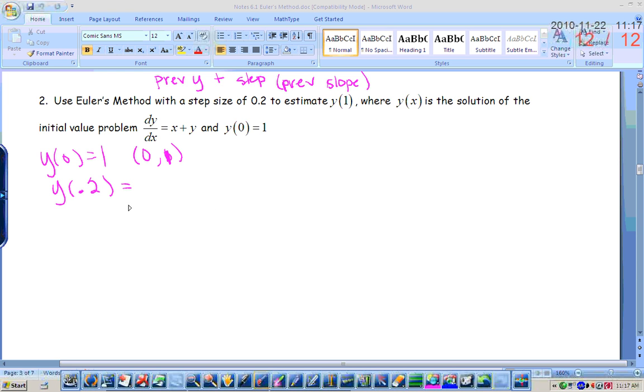The previous y value, so the previous y value would have been the y value when x was 0. What's that? 1. Plus the step size is 0.2, and then the slope at the previous point. Well, my slope formula is x plus y, and the previous point was 0, 1, so what's the slope? 1.